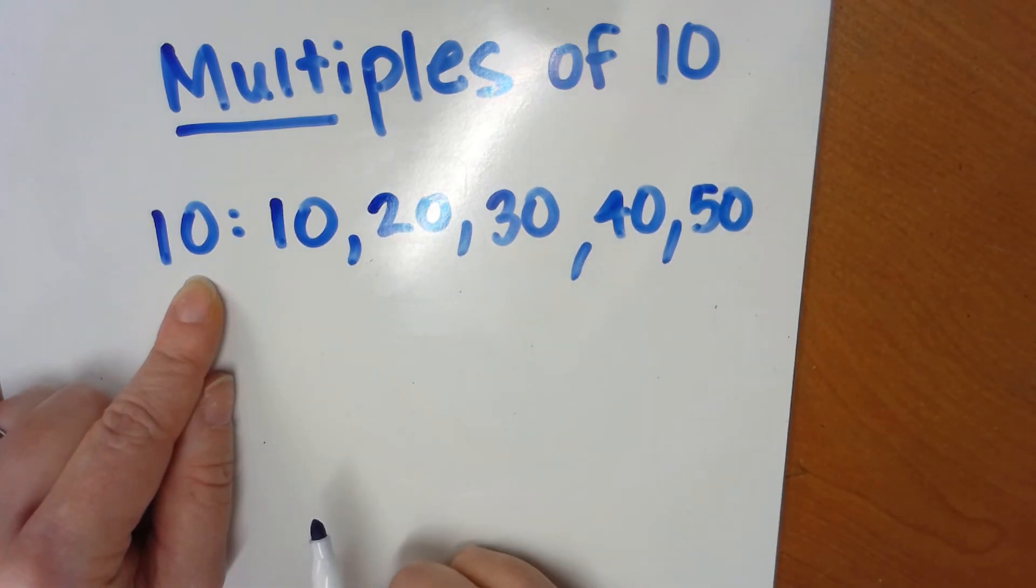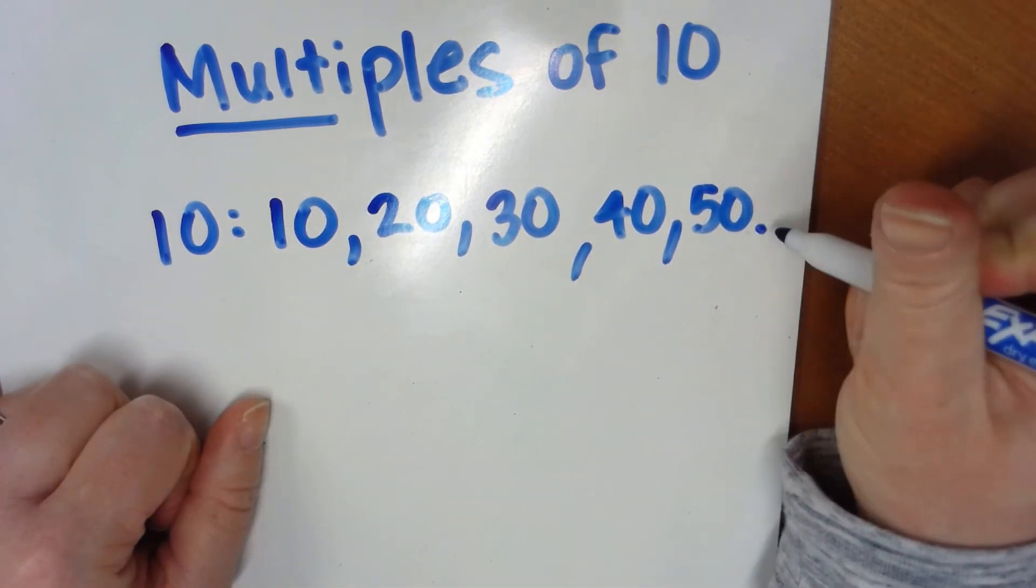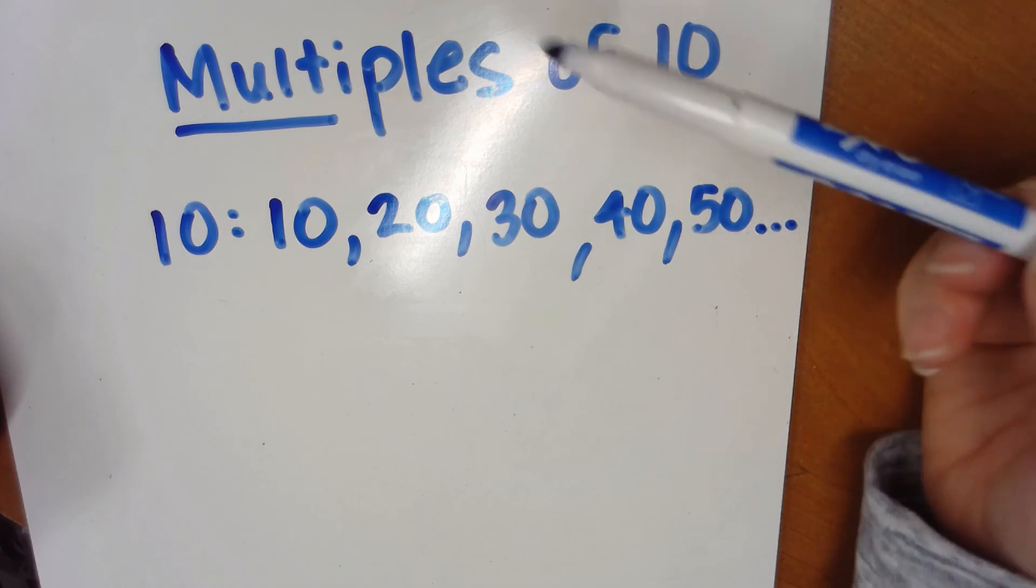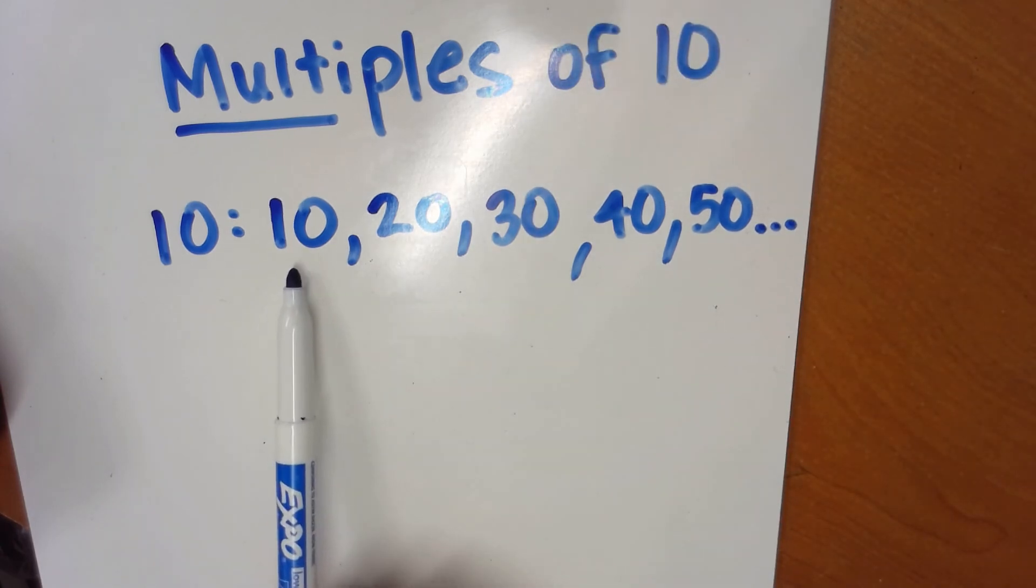I've already listed the first 5 multiples of 10. Now, they do go on forever. They are what we call indefinite, but multiples are just like skip counting. You always start with the number itself and then skip count by that number in order to find multiples.